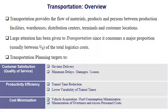The second target is productivity efficiency. This can be achieved by reducing transit time — the time of transportation between different locations. Reducing transit time leads to transporting products faster, and the cost for this transit will be lower.